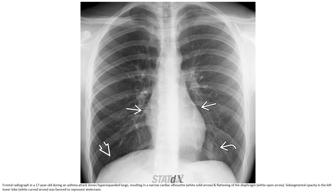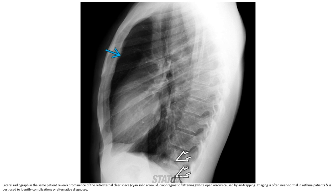This is a radiograph in a 17-year-old during an asthma attack. There is hyperinflation resulting in a narrow cardiac silhouette and flattening of the diaphragm. Subsegmental opacity in the left lower lobe likely represents atelectasis. The lateral radiograph of the same patient reveals prominence of the retrosternal airspace and diaphragmatic flattening caused by air trapping.